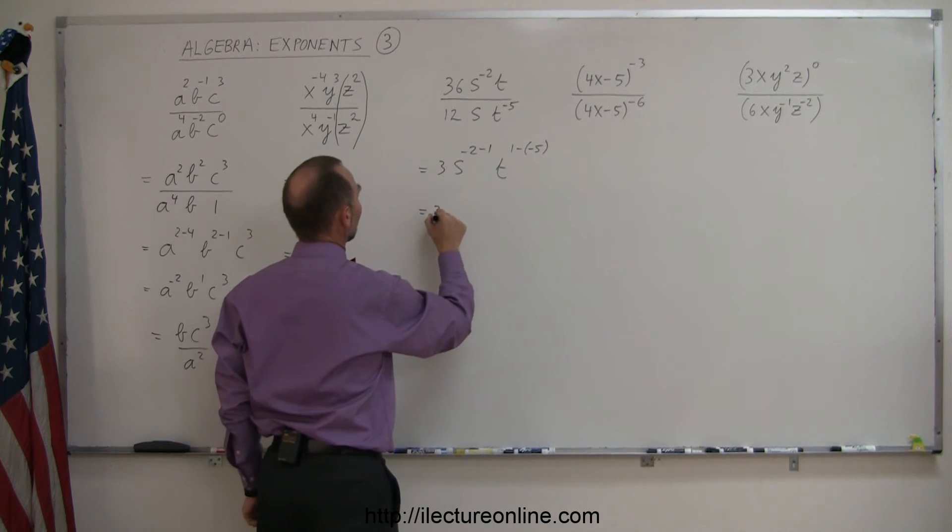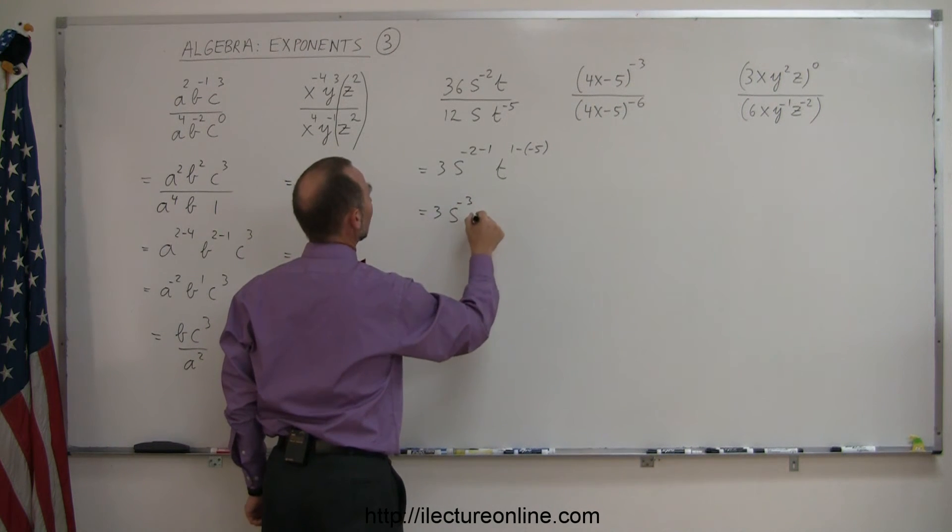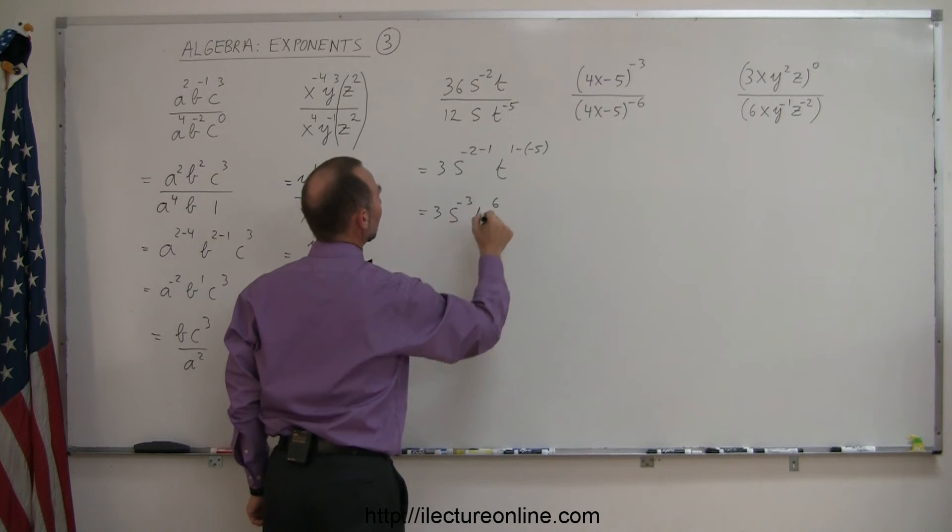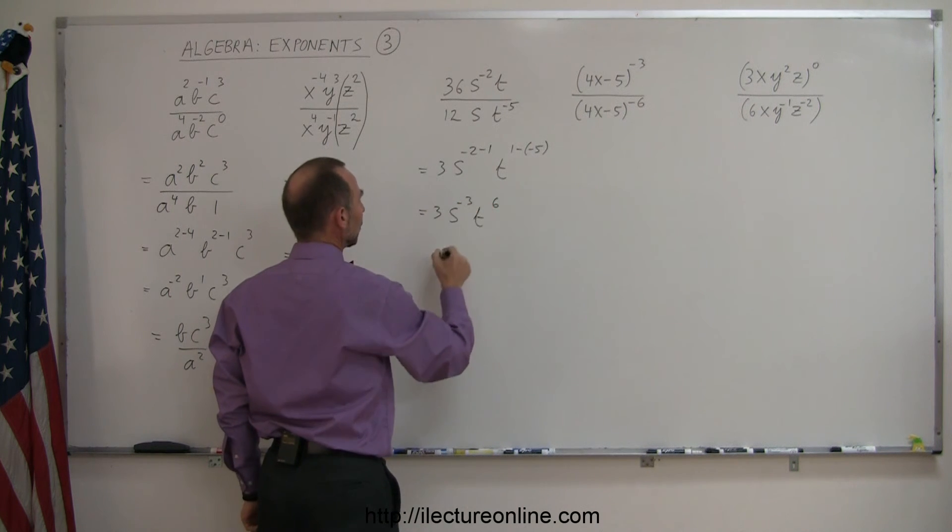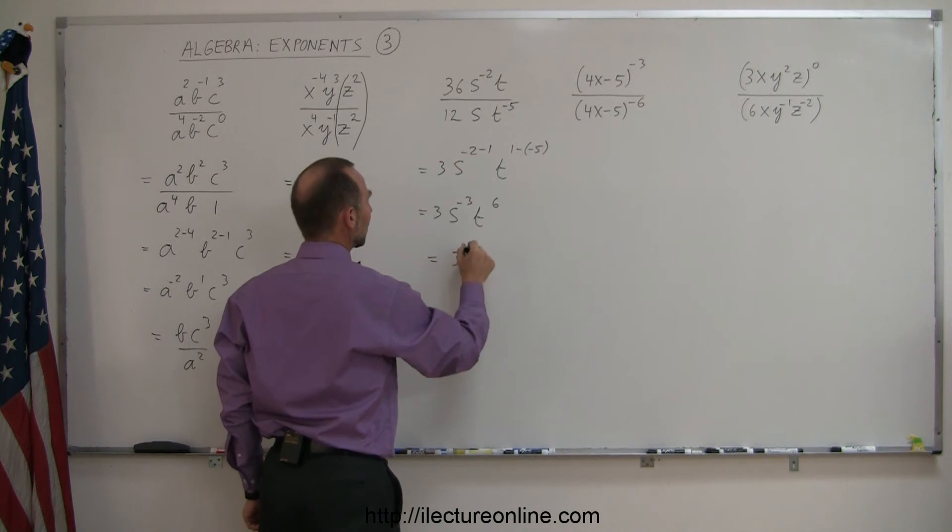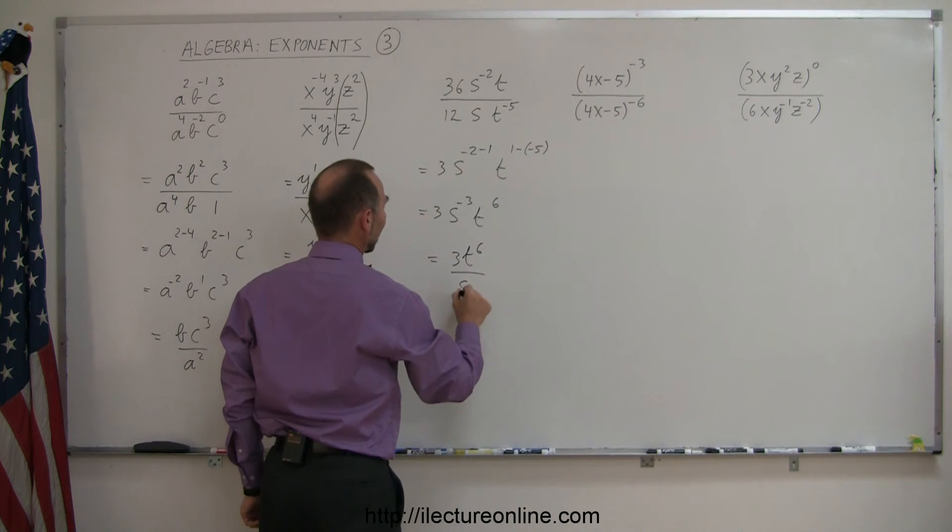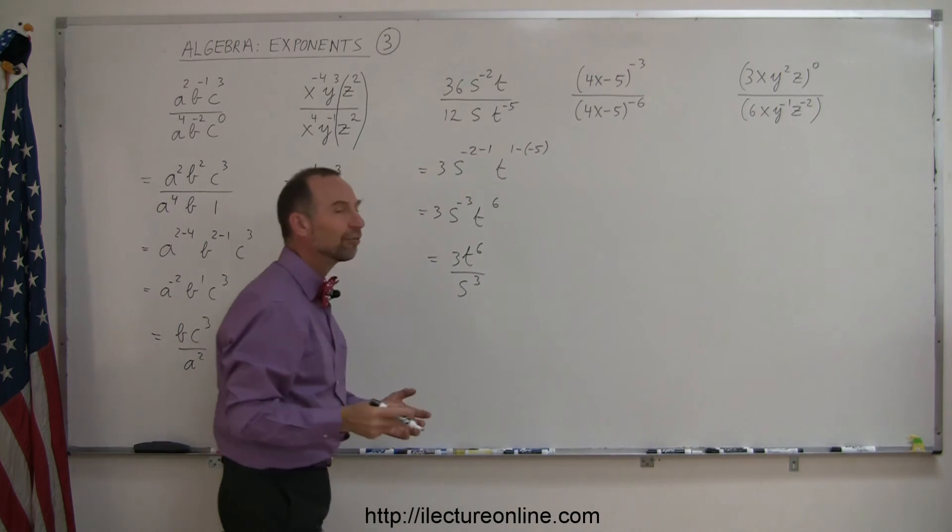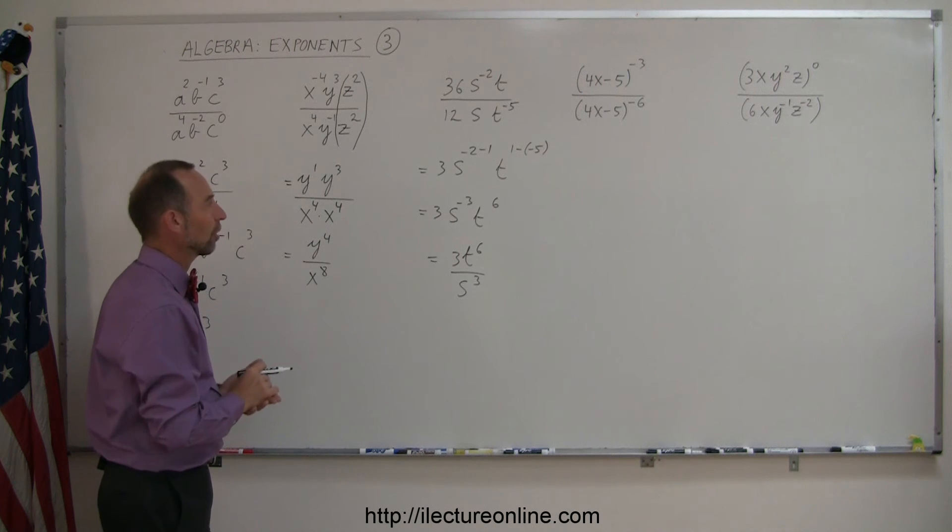And then simplifying this, I get 3s to the minus 3 power times t to the positive 6 power. And since this is a negative exponent, I move it down, and it becomes 3t to the sixth divided by s to the third power. So there's different approaches that you can follow to solve and simplify these equations or these expressions.